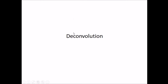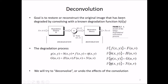Let us talk about deconvolution. As we have already discussed, this model of degradation and the restoration process — the goal is to restore or reconstruct the original image that has been degraded by convolving with the degradation function H(x,y). This was our original image, this is the degradation function, and then we have additive noise. G(x,y) is the degraded image. We apply restoration filters to get F̂(x,y) and restore the image.